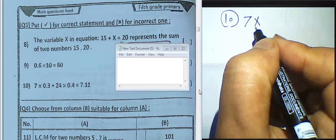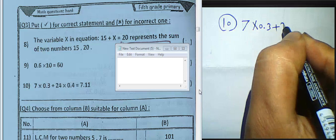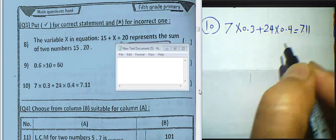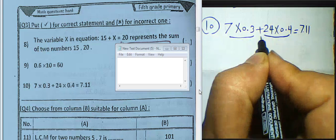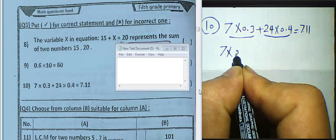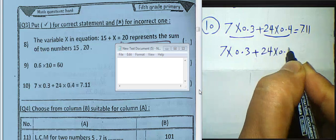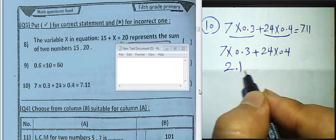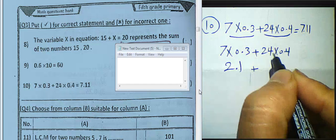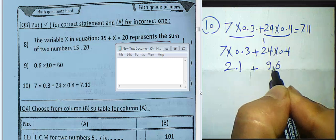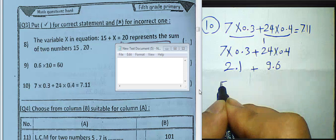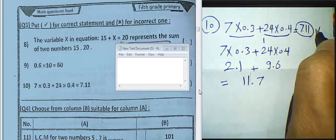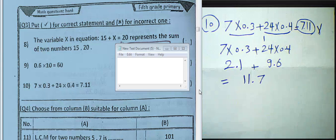Question 10: 7 multiplied by 0.3 plus 24 multiplied by 0.4 equals 7.11 — true or false? We solve each part: 7 times 0.3 equals 2.1, and 24 times 0.4 — 4 times 4 equals 16, carry 1, 2 times 4 equals 8 plus 1 equals 9, giving 9.6. Adding 2.1 plus 9.6 equals 11.7. So the answer 7.11 is False; the correct result is 11.7.